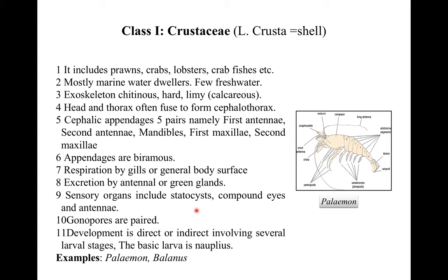Class 1 is Crustacea. Crusta means shell, so shell-bearing arthropods are Crustacea. This class includes prawns, crabs, lobsters, crawfish, etc. They are mostly marine but some are freshwater as well. The exoskeleton is chitinous, hard, and calcareous. Head and thorax are often fused to form a cephalothorax.